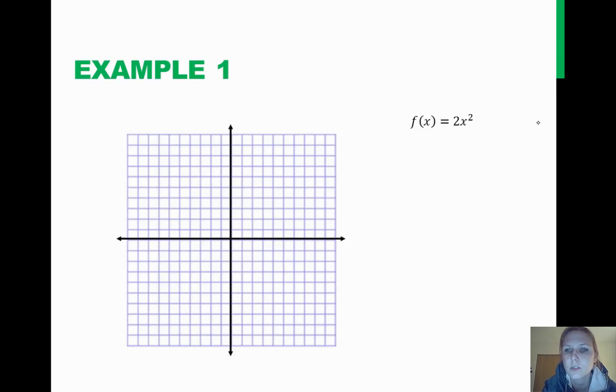So we have f of x equals 2x squared. On this, we know that this is an ax squared plus bx plus c form. In this case, our a is 2, our b happens to be 0, and c is also 0.